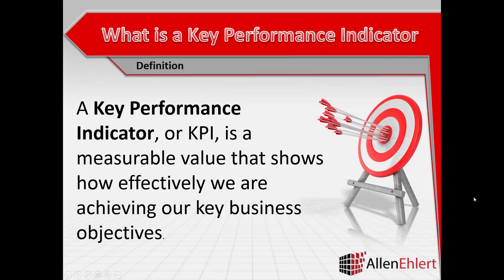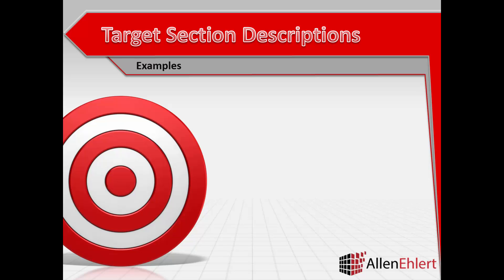A Key Performance Indicator is a measurable value that demonstrates how effectively we are achieving our business objectives. We use KPIs at multiple levels to evaluate our success at reaching targets. High-level KPIs may focus on our overall performance and our value to the organization, while lower-level KPIs focus on the performance of processes that describe how well our different sections, such as networking or service delivery, are performing. Key Performance Indicators let us know if we are on target.